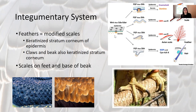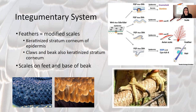The claws and the beak in birds are also keratinized stratum corneum. If you compare the scales of a reptile — so scales of a snake — to the structure of feathers, you see a similarity in the ways they overlap and just the way they look. Birds do still have scales like reptiles on their feet, and some of them do at the base of their beak.